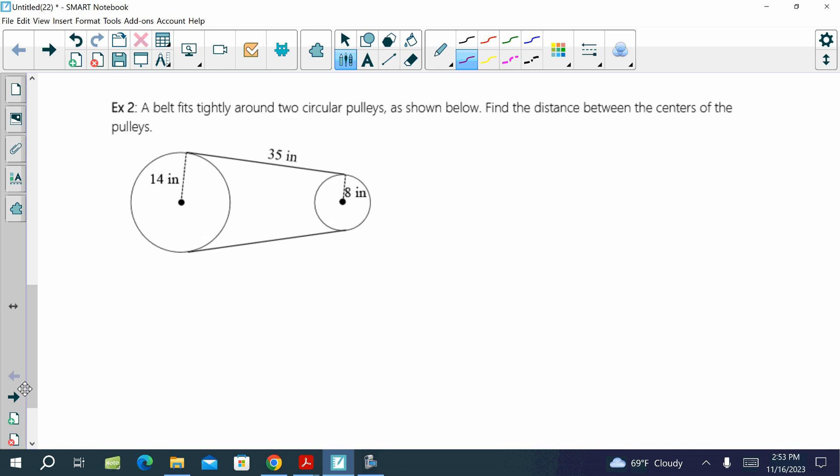A belt fits tightly around two circular pulleys as shown below. Find the distance between the centers of the two pulleys. So looking here, from one center to the other center is what we are trying to find. So that's going to be X. I want you to talk to somebody next to you and figure out what we could possibly do to help us break this down to find X. Talk to somebody.